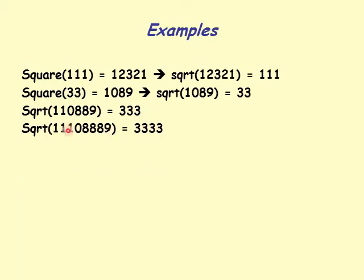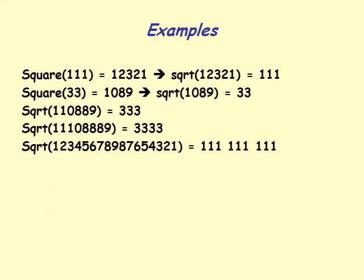Square root of 1110889 is 333. And square root of 123456789 decreasing 8 7 6 5 4 3 2 1 is 111111111.